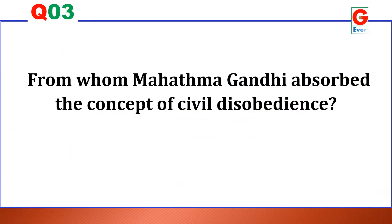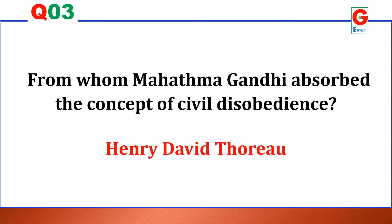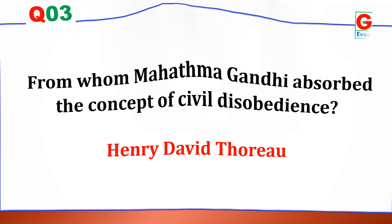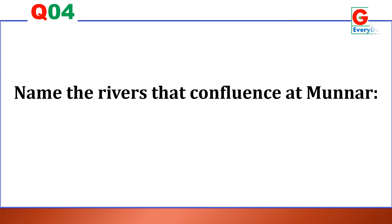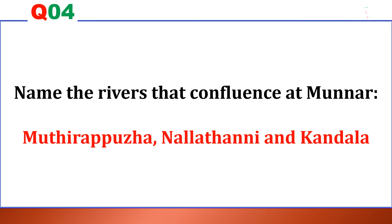From whom did Mahatma Gandhi absorb the concept of civil disobedience? Answer: Henry David Thoreau. Next question: Name the rivers that confluence at the monarch. Answer: Mudrapula, Nalladhani, and Kandrila.